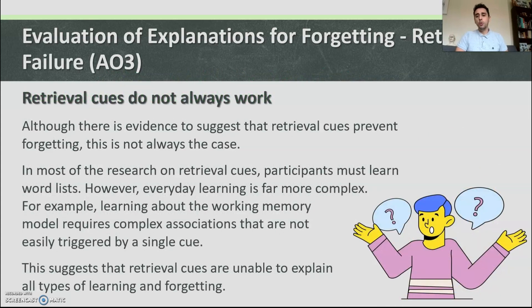However, retrieval cues do not always work. Although there is evidence that retrieval cues prevent forgetting, this is not always the case. Most research on retrieval cues has participants learn word lists, but everyday learning is far more complex. For example, learning about the working memory model requires complex associations not easily triggered by a single cue. This suggests that retrieval cues are unable to explain all types of learning and forgetting — a limitation.